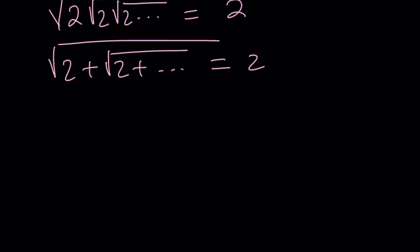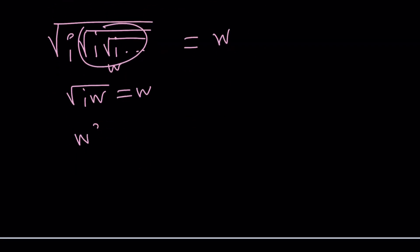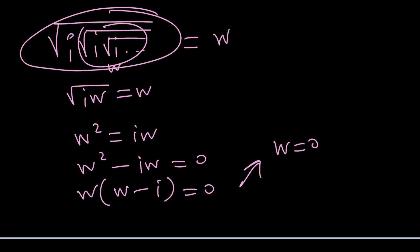But what about complex numbers? Can we safely say that this converges? I mean, we can kind of set it equal to w and just say that, okay, this is w. Square root of iw equals w. I can square both sides. w squared equals iw and then put everything on the same side. Don't simplify. Don't cancel out anything. So we're going to get two solutions from here. W is 0, which doesn't make sense at all because we know this is not 0.